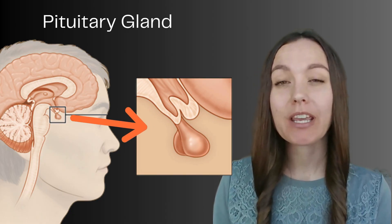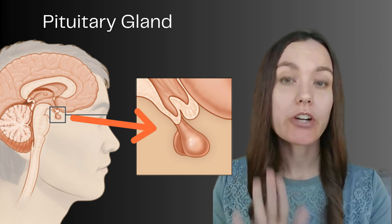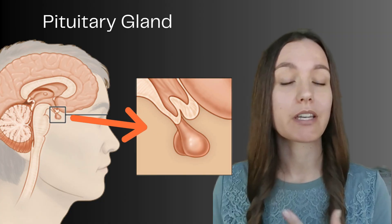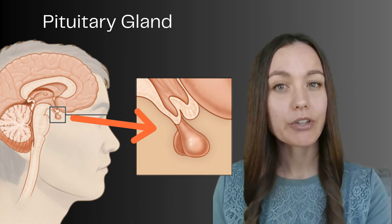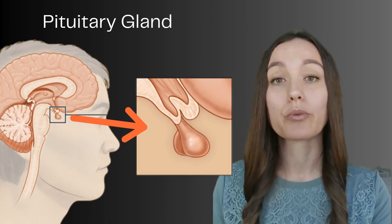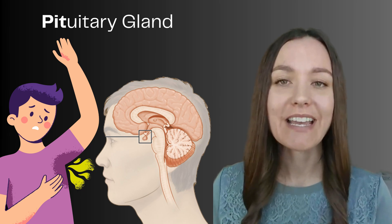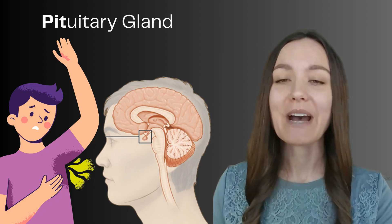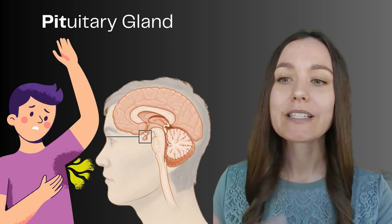Next is the pituitary gland. It's not actually part of the limbic system, but it sits directly underneath the hypothalamus and works under its guidance. The pituitary gland is part of the endocrine system — not made of nerve cells. It sends hormones into the bloodstream and is considered the master gland of the endocrine system because it communicates to other glands messages about growth and development, reproduction, and stress. To remember its function, I think of the first part of the word — 'pit' or 'pits' — which reminds me of armpits. Stinky pits start in puberty, and you can thank your pituitary!